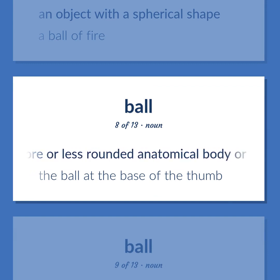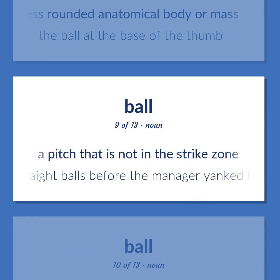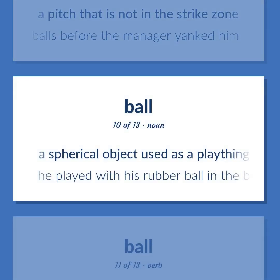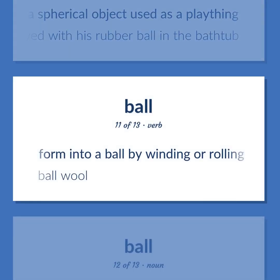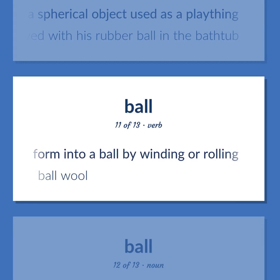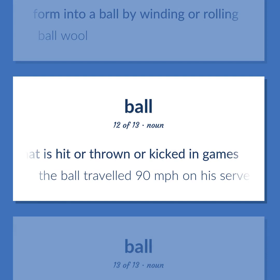Ball: A more or less rounded anatomical body or mass. Example: The ball at the base of the thumb. A pitch that is not in the strike zone. Example: He threw nine straight balls before the manager yanked him. A spherical object used as a plaything. Example: He played with his rubber ball in the bathtub. Form into a ball by winding or rolling. Example: Ball wool. Round object that is hit or thrown or kicked in games. Example: The ball traveled 90 miles per hour on his serve.